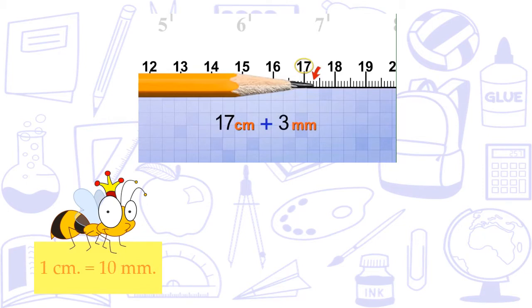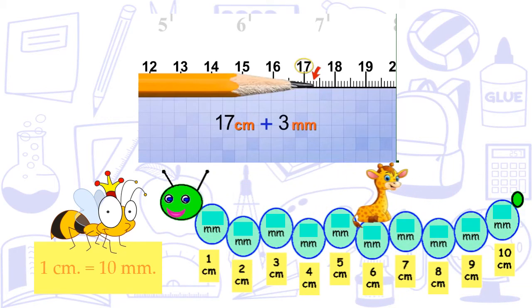Now, we have 1 centimeter equals 10 millimeters. In our work, we have 1 centimeter equals 10 millimeters. 2 centimeters will be 20 millimeters. 3 centimeters will be 30 millimeters. 4, 40 millimeters. 5, 50 millimeters. 6, 60 millimeters. 7 will be 70 millimeters. And 8, 80 millimeters. 9, 90 millimeters. And finally, 10 will be 100 millimeters. To make it easy, let's go to solve some exercises.